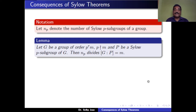Let G be a group of order P raised to R times M, where P does not divide M, and let capital P be a Sylow-P subgroup of G. Then the number of Sylow-P subgroups of G, that is NP, divides the index of P in G, which is equal to M. This is because the order of G equals P^R·M, and the order of P equals P^R, so the index of P in G equals M.